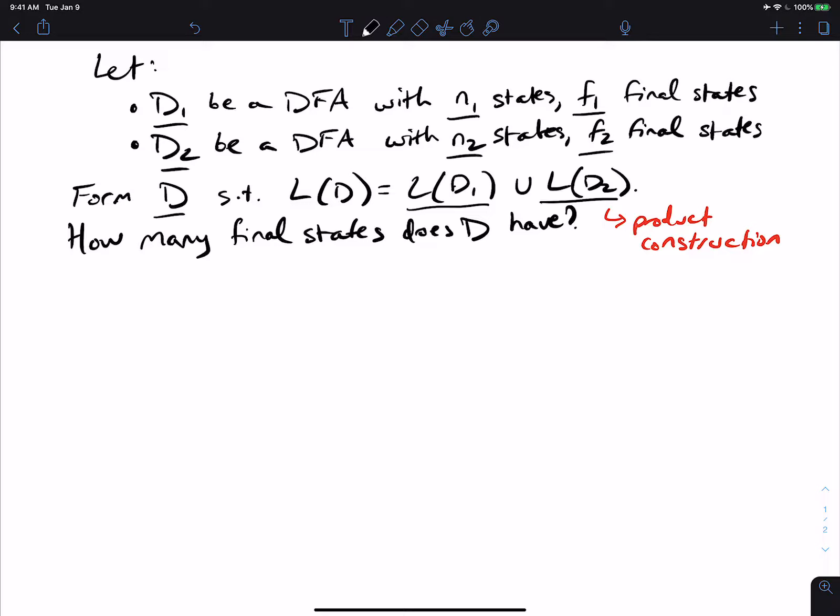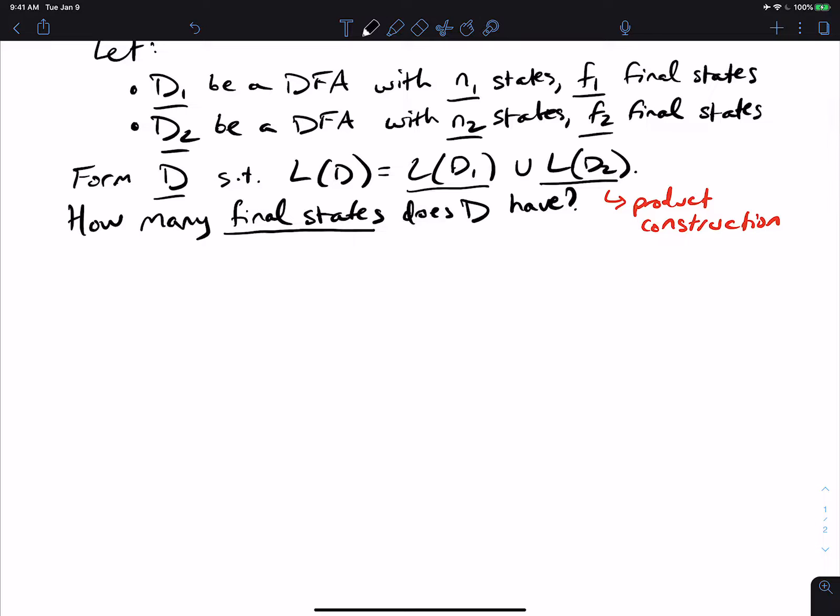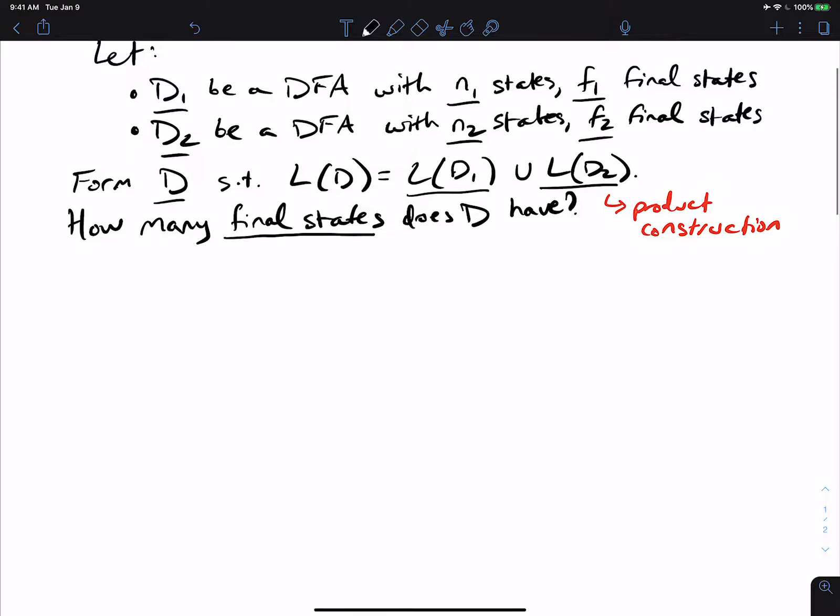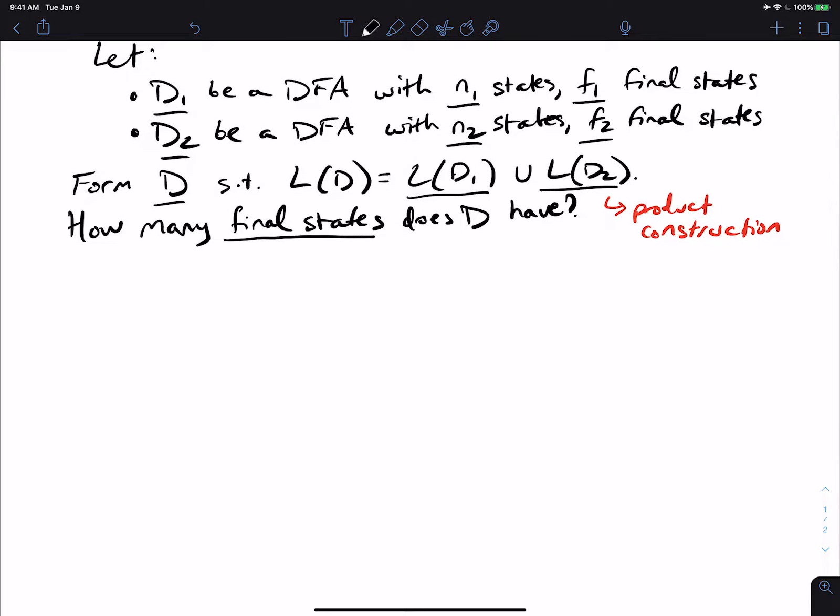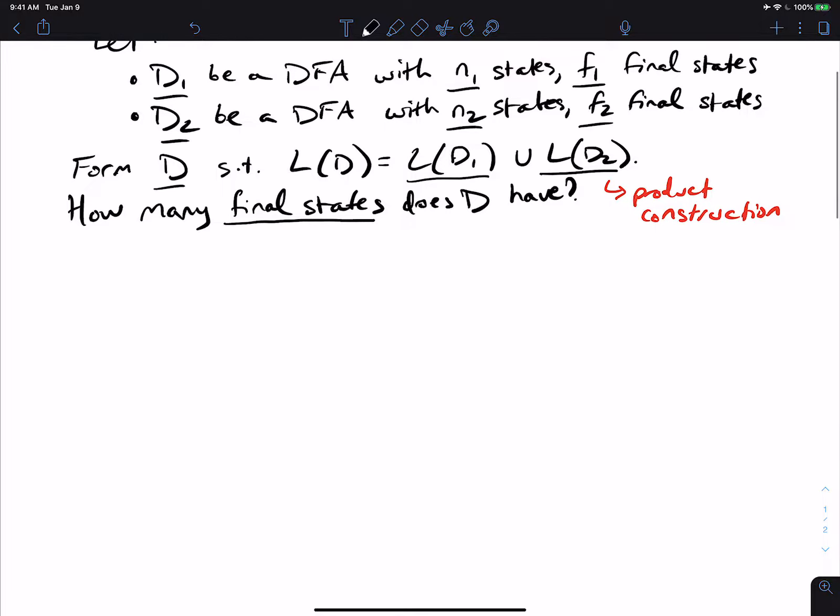Now the question we want to answer is how many final states does the DFA D have? Just knowing the number of states in the two original machines and the number of final states in them.